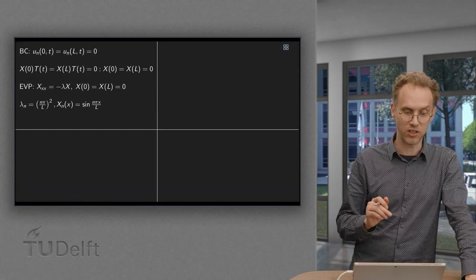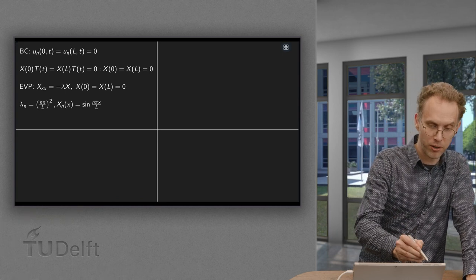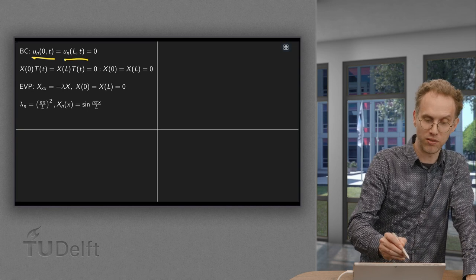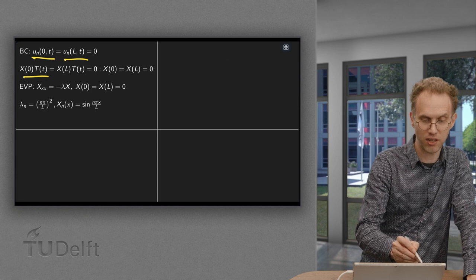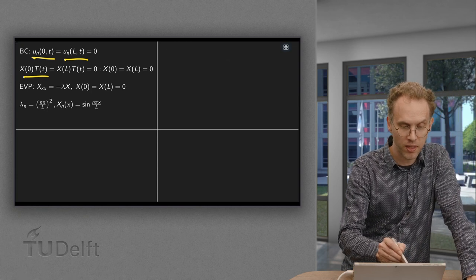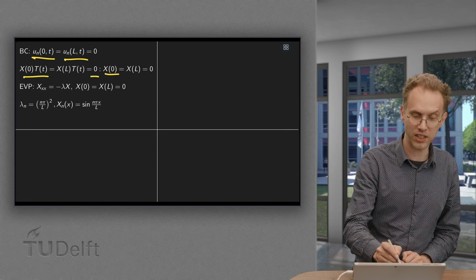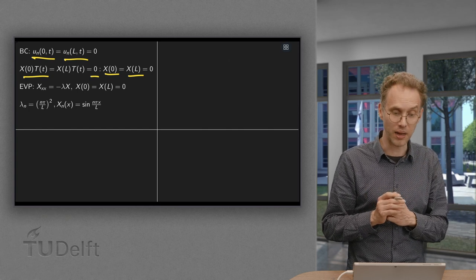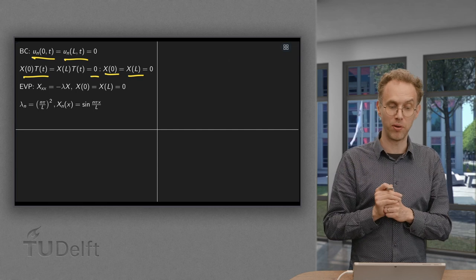First we look at the boundary conditions and then the equation for X. On the boundary we had U of 0 and U L comma T equals 0. So at X equals 0 we have X of 0 T of T. And that has to be equal to 0, which means that X at 0 and X at L both have to be 0. Because they have to be 0 for all times, and it's only possible if X of 0 and X of L are both 0.